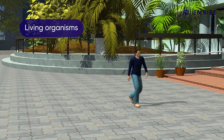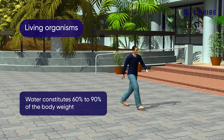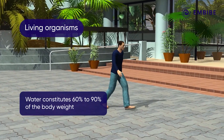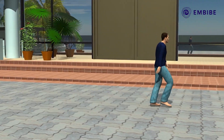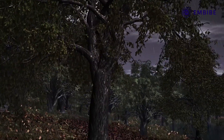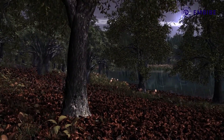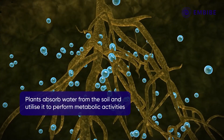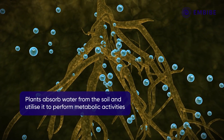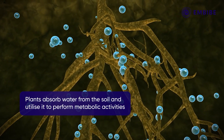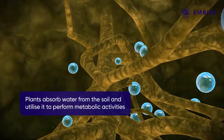Some organisms have a narrow range of temperature tolerance and are called cold-blooded animals. The next abiotic factor is water and rain. Life is impossible without water. In living organisms, water constitutes about 60 to 90 percent of body weight. Soil receives water through rain, and plants obtain water from the soil, which is then utilized for metabolic activities.